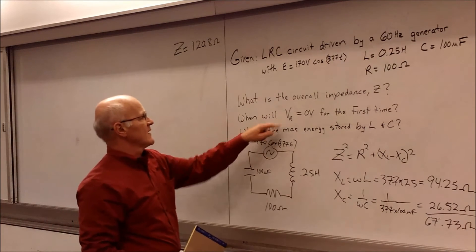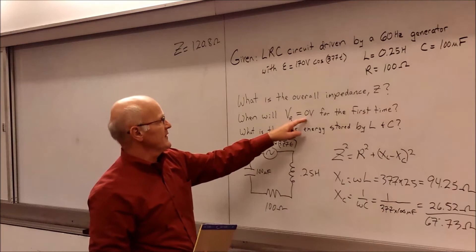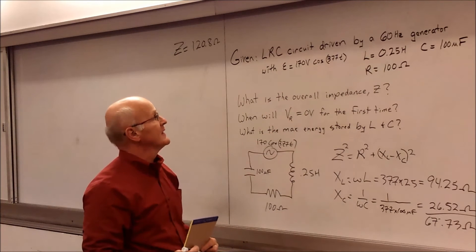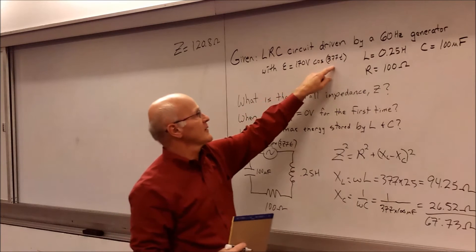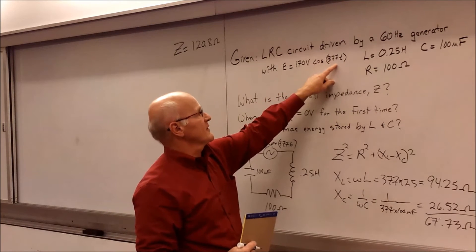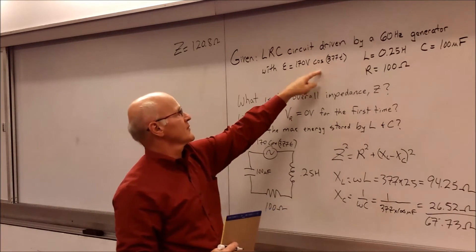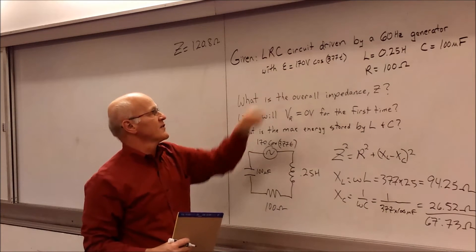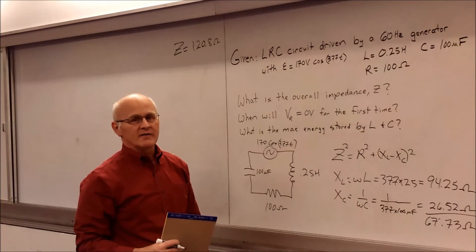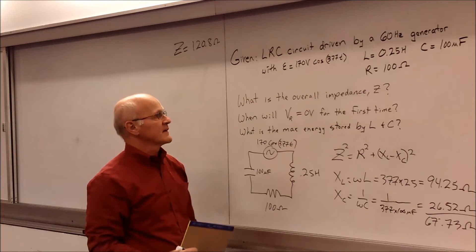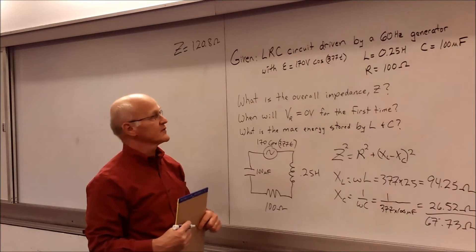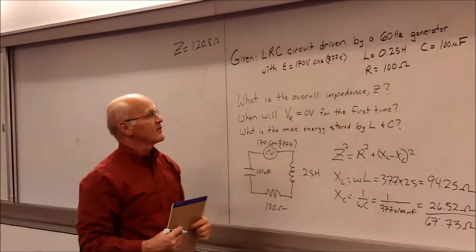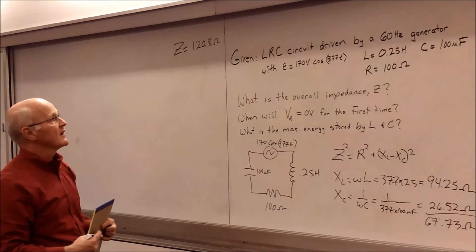Next question is, when will VR, the voltage on the resistor, be equal to zero for the first time? So by looking at our equation driving our circuit, we can see that at time zero, when we take 377 times zero, we get zero, of course. Cosine of zero is one. So we start off with the generator at its maximum voltage. An unlikely scenario in real life, but we're going to do that kind of a problem just to show you how to operate with cosine instead of the normal sine equation.